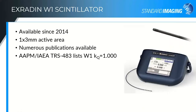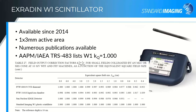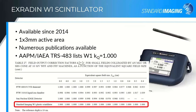Our first generation device is called the W-1. It has been available since 2014, so there are a fair number of publications and a lot of experience with it — eight years on the market. It has that one millimeter diameter, three millimeter long active area. It is part of the TRS-483 publication, which is the joint publication from the AAPM and the IAEA on small fields. Every table that our scintillator appears in, for all field sizes available, the correction factor is unity — these are KQ values — reflecting that this is truly water equivalent and that as energies change in really small fields, it doesn't affect the output of the scintillator.